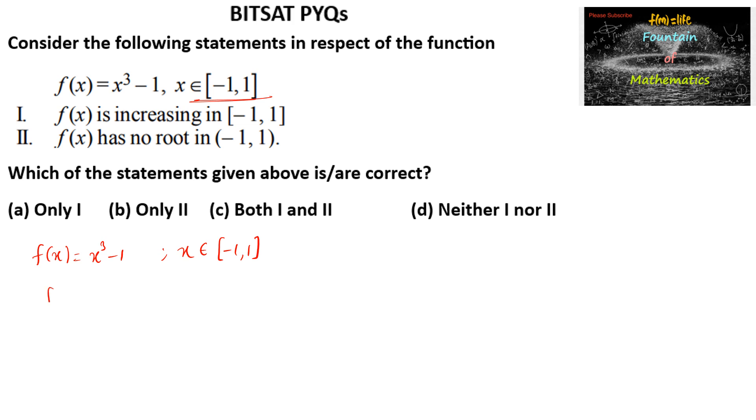Let us differentiate. f dash of x is equal to 3x square minus 0, and here we can say that for any real number, 3x square is always greater than or equals to 0.